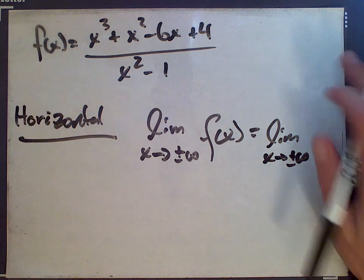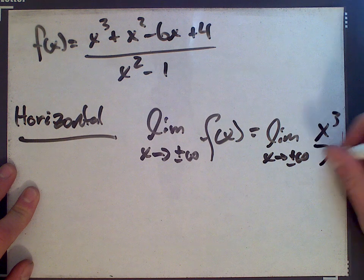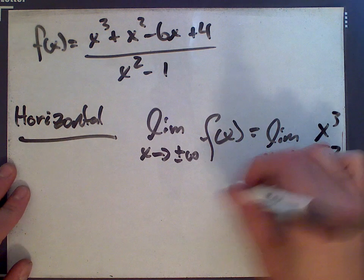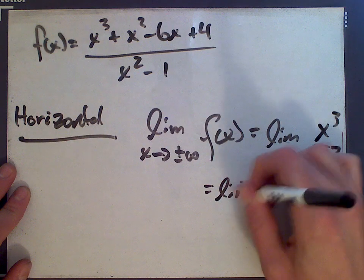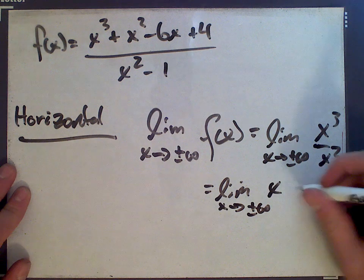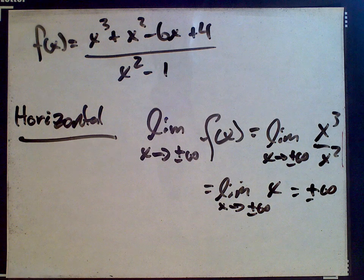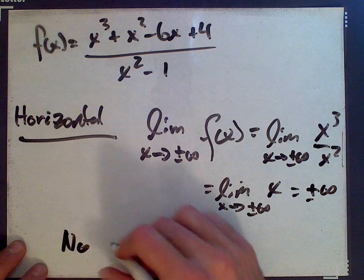What you do is you take just the highest powers of x when you take limits at infinity. So this is x cubed over x squared, which is the limit as x goes to plus or minus infinity of x, which is plus or minus infinity. So there's no horizontal asymptote.